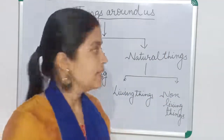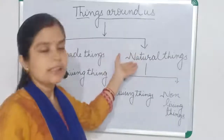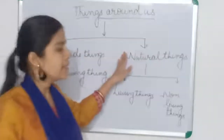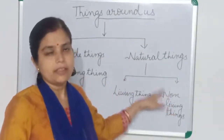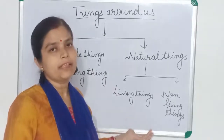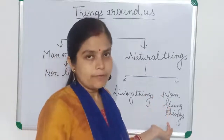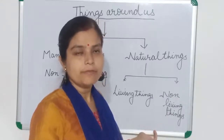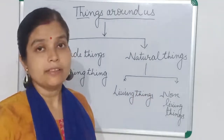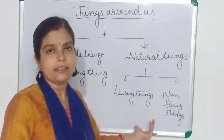So today we have studied that things are divided into two main categories: man-made things and natural things. Man-made things are made by man; natural things are created by nature. Man-made things are always non-living, but natural things may be living or non-living. Living things can move, can grow, need food, can feel, can breathe, and can reproduce. Non-living things do not need food, cannot feel, cannot move, do not grow, do not reproduce, and do not breathe. That is the difference between living things and non-living things. Thank you, children.